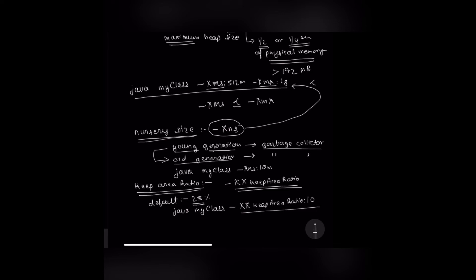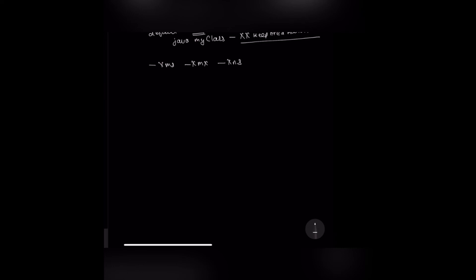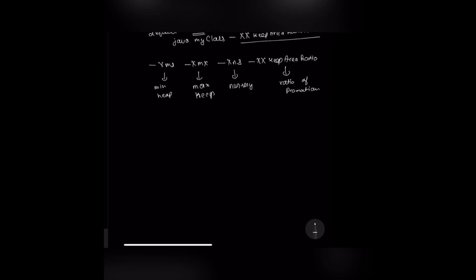These are some of the important parameters we learned to regulate heap size in our Java process. As a revision: -Xms is minimum heap, -Xmx is maximum heap, -Xns is nursery size, and -XX:keepAreaRatio is the ratio of promotion from young to old generation.